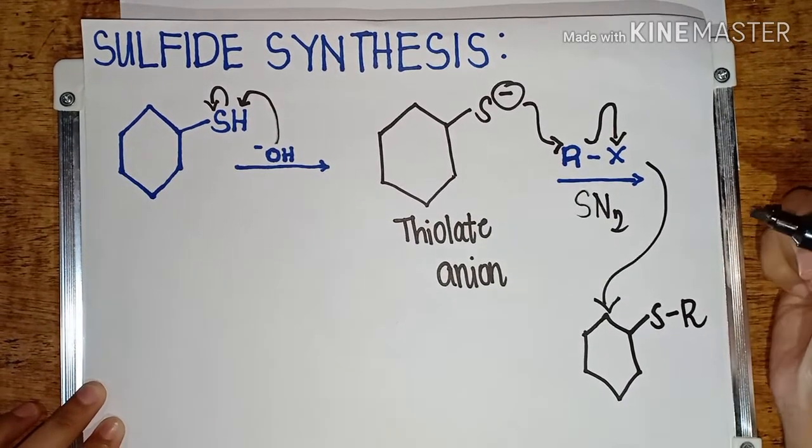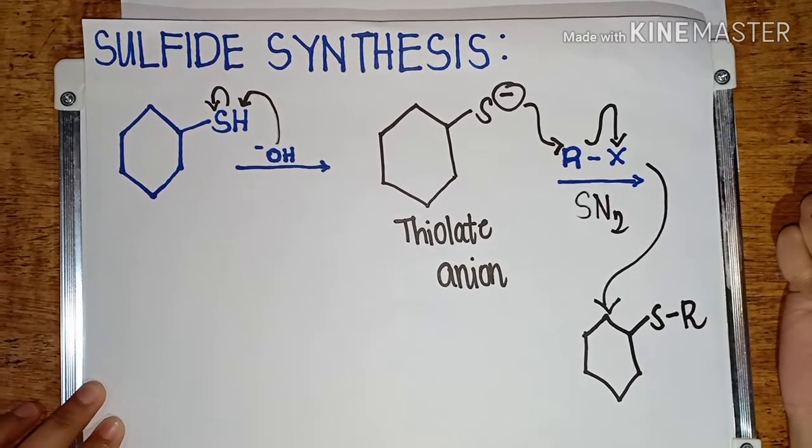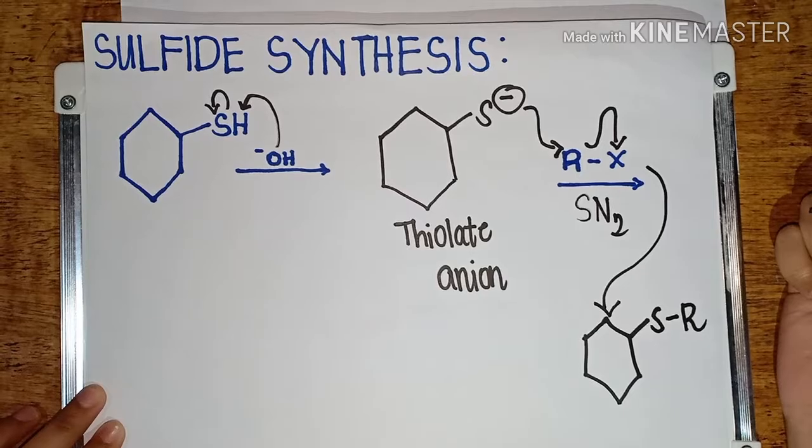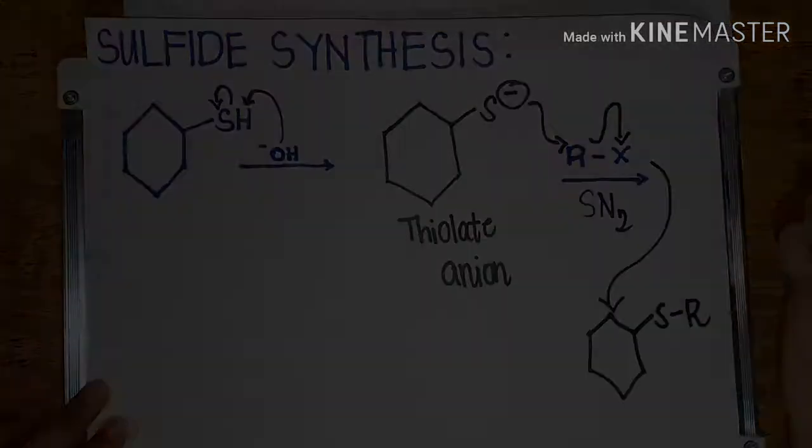Just pick the alkyl halide of your choice — that's how we make a sulfide out of a thiol. Did you learn a lot from the video? Send us your feedback, and thank you for watching!